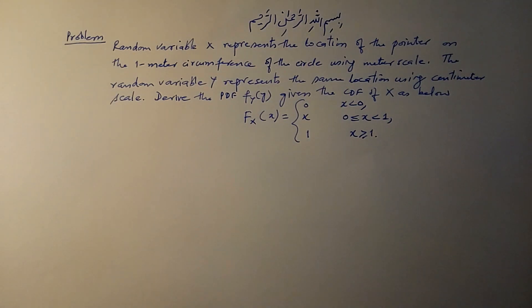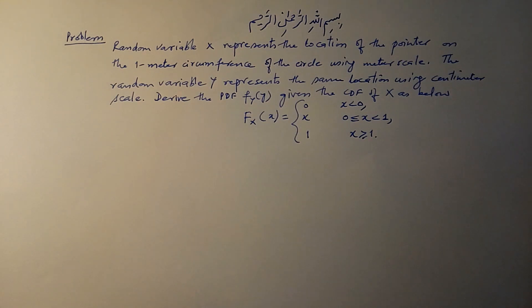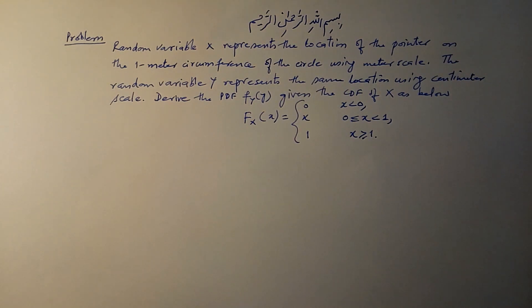Here is a problem related to derived random variables. The random variable X represents the location of a pointer on a 1-meter circumference circle using a meter scale. The random variable Y represents the same location using a centimeter scale. We need to derive the PDF of the random variable Y, given the CDF of X.